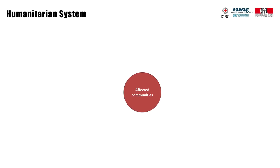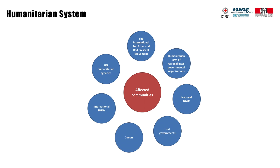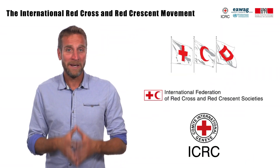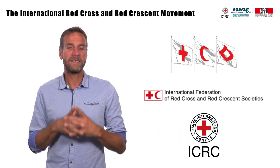In the humanitarian system, there are entities whose primary mandate is to provide humanitarian assistance, such as the United Nations humanitarian agencies, the International Red Cross and Red Crescent Movement, or national and local agencies with responsibilities for crisis response. There may also be other actors that play critical roles in humanitarian response, such as private sector entities or diaspora. In an ideal world, all these actors should work in good coordination, but that is not always the case.